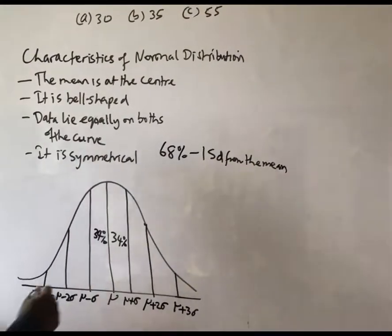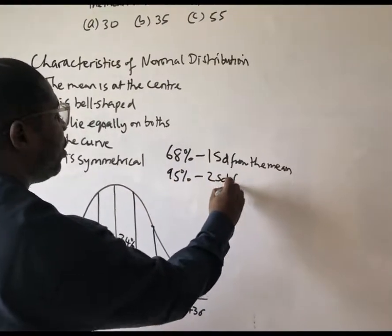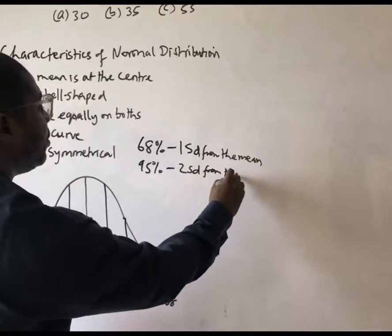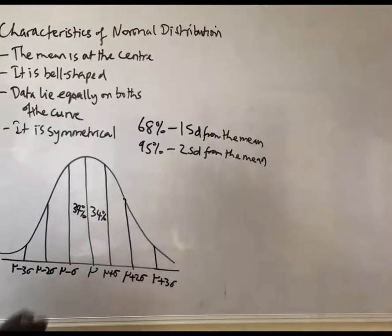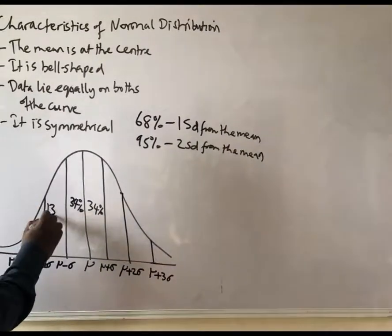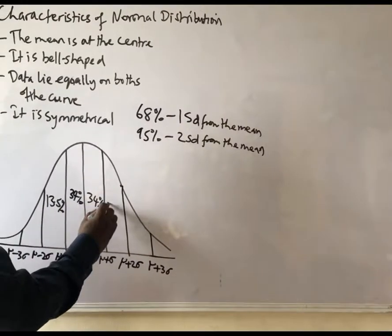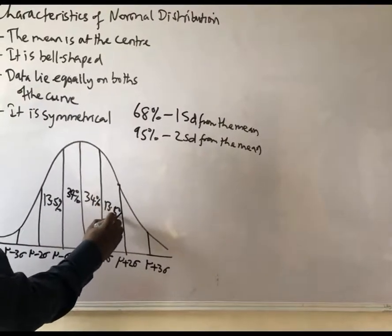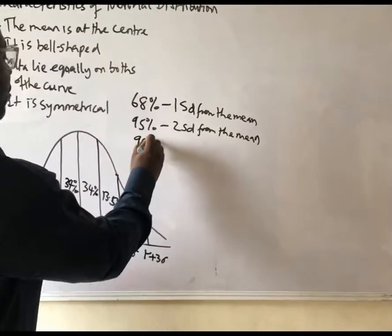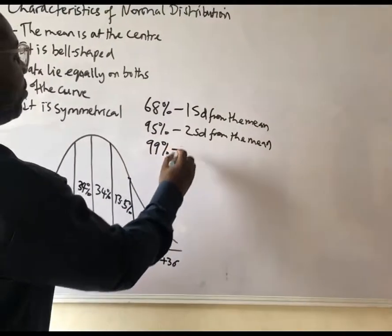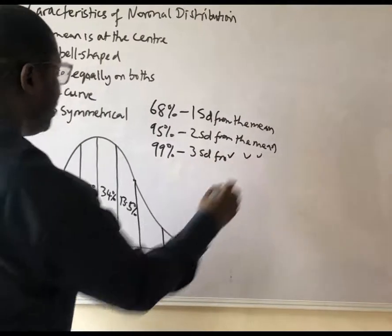We also have 95% lying within two standard deviations from the mean. That 95% is made up of 13.5% on the left side and 13.5% on the right side, in addition to the central 68%. And almost everybody lies within three standard deviations from the mean.